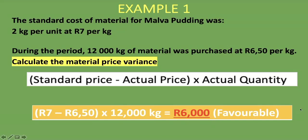Why is it favorable? Remember the note from the previous slide — if the actual is less than the standard, it's favorable. We actually paid 6 rand 50 but our standard cost was 7 rand, so we paid less than we expected and saved 6,000 rand. That is why it's favorable.